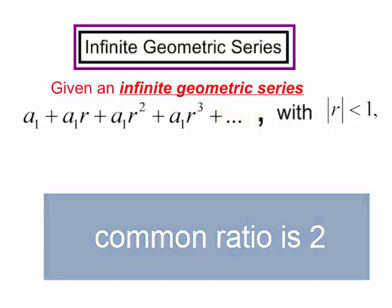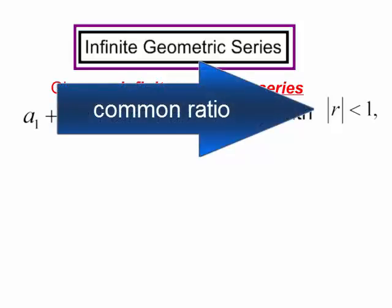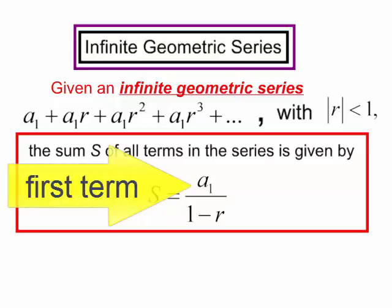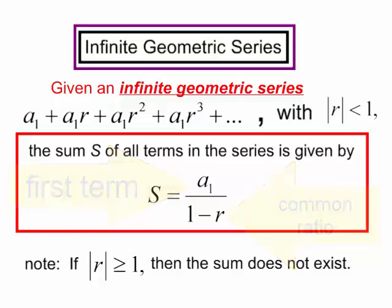So if I am given an infinite geometric series where the absolute value of the common ratio is less than 1, my formula for finding the sum of all the terms in the series is given by S is equal to a sub 1 divided by 1 minus r. Now if the absolute value of r is greater than or equal to 1, then the sum does not exist.